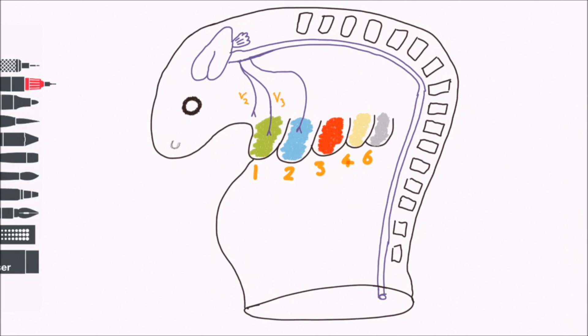The second pharyngeal arch, also known as the hyoid arch, is supplied by the facial nerve. The third pharyngeal arch is supplied by the glossopharyngeal nerve.